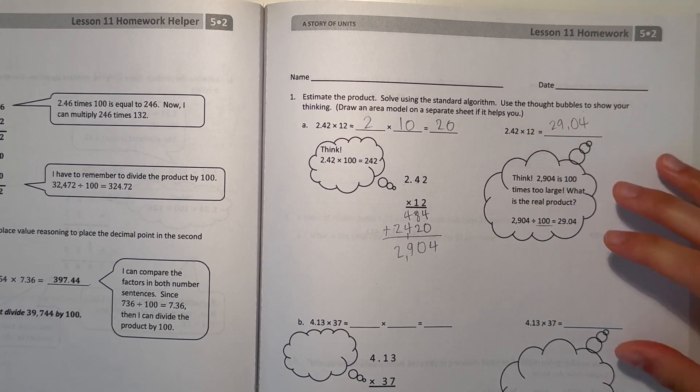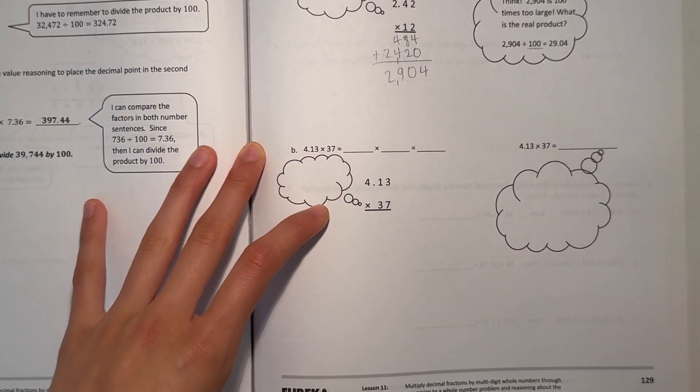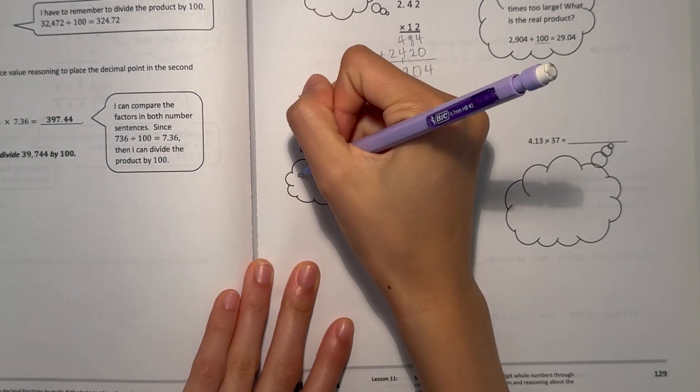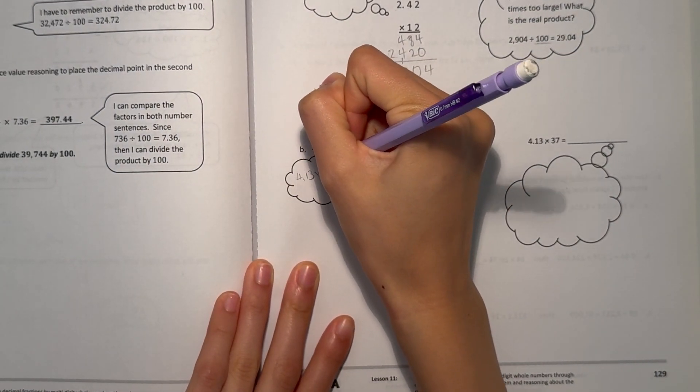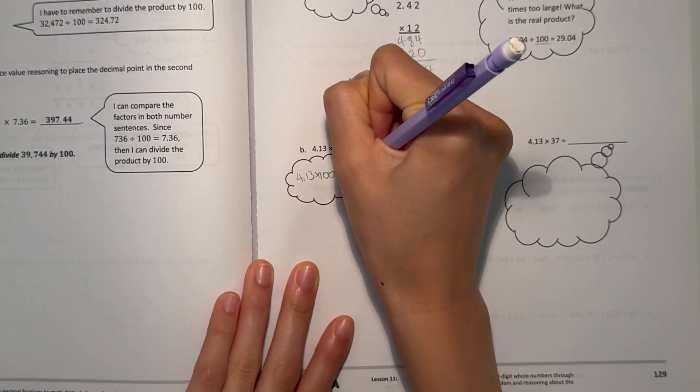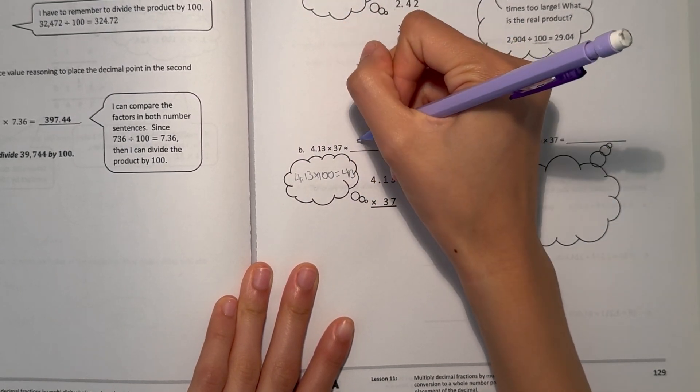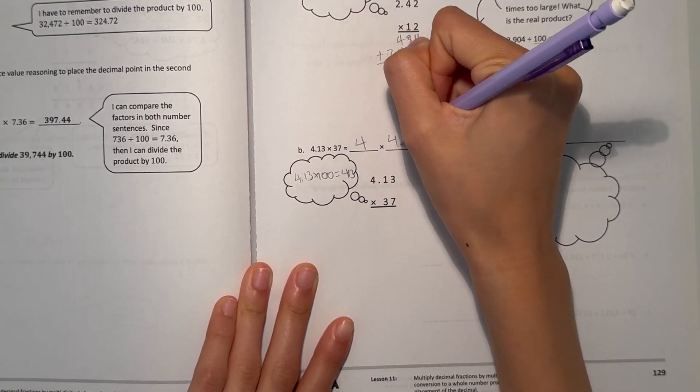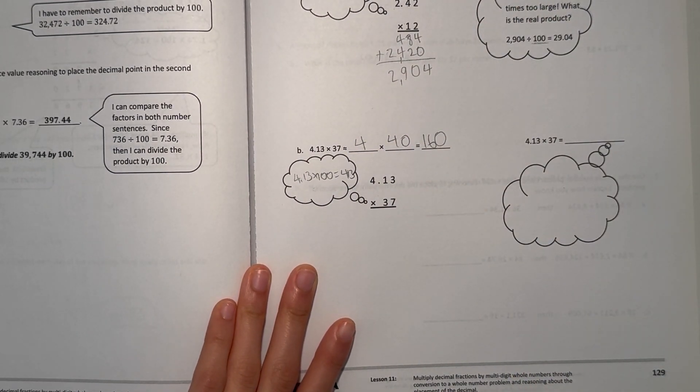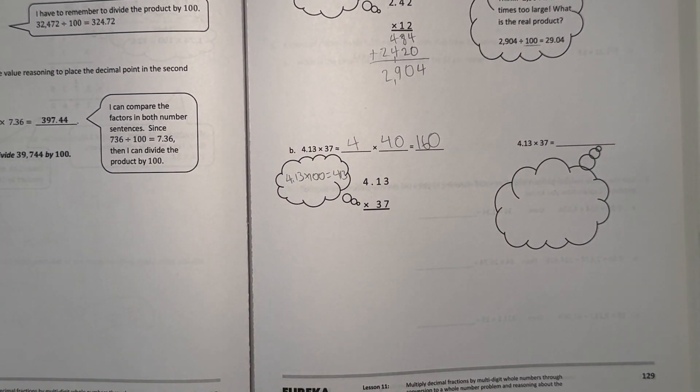Now if we look at B, 4.13 times 37. Think 4.13 times 100 to get rid of the decimal point is 413. And let's also estimate: 4.13, that's 4 times 40, which is 16. Add the 0, 160 is our estimate.